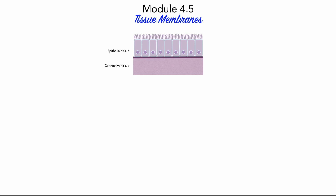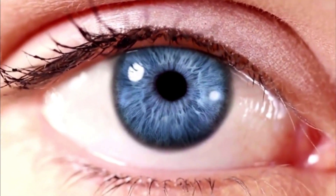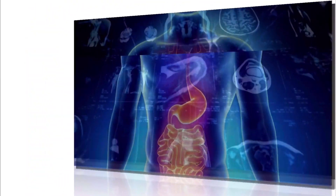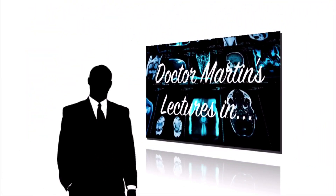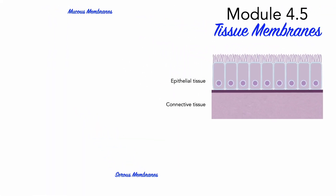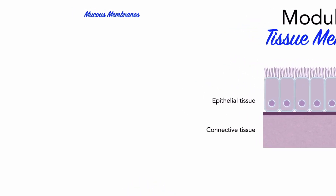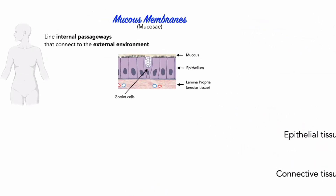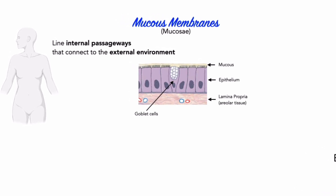The human body has four such membranes: mucous membranes, serous membranes, the cutaneous membrane, and synovial membranes. First, let's discuss mucous membranes. Mucous membranes, or mucosa, line internal passageways and chambers that open to the exterior environment.